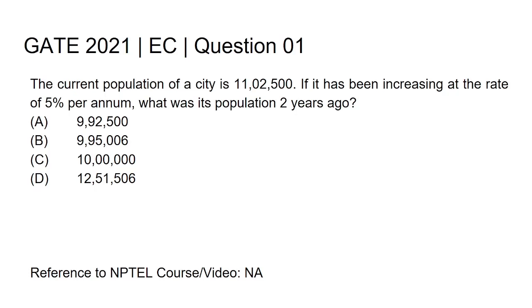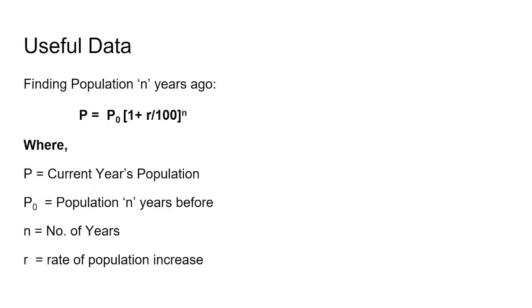The options are: option A — 99,25,000; option B — 99,50,006; option C — 1,00,00,000; option D — 1,25,15,006.